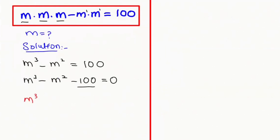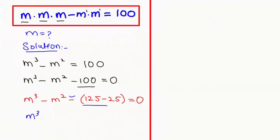Now I'm going to spread this 100. m cubed minus m squared — I'm going to write 125 minus 25, which gives us 100, equals zero. Now I'm going to multiply this bracket with this sign, so m cubed minus m squared, and I'm going to express these in the form of powers: 5 to the power of 3 gives us 125, minus 5 to the power of 2 gives us 25, equals zero.